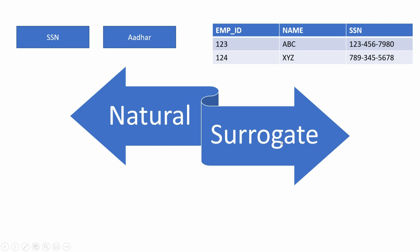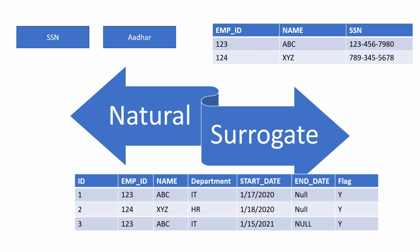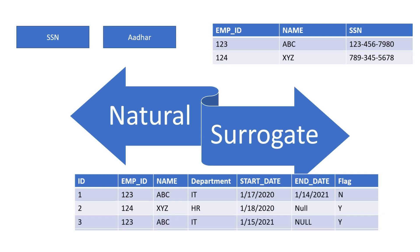A surrogate key is usually an auto-incremented integer which is generated when a row is inserted in the system. For example, here we are maintaining historical changes for employees, so we will have multiple records for every employee. In this case, we can create a column ID which will be auto-incremented by 1 every time a new row is inserted. Using ID, we can then identify each row in the table uniquely.